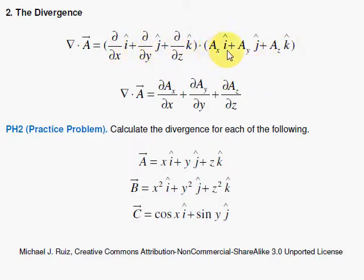Here you have j dot i, 0, and j dot j, so you're going to have the partial of Ay with respect to y, and then finally the partial of Az with respect to z. That's neat.